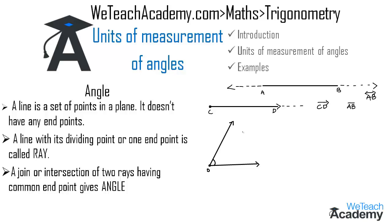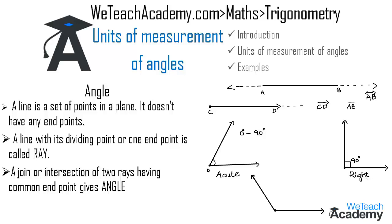Angles are classified into three types. An angle ranging between zero degrees and ninety degrees is called an acute angle. An angle of exactly ninety degrees is called a right angle, and the angle formed by a straight line equals one hundred eighty degrees. An angle ranging between ninety degrees and one hundred eighty degrees is called an obtuse angle. When a rotating ray completes one full rotation, the angle formed equals three hundred sixty degrees — a complete angle.